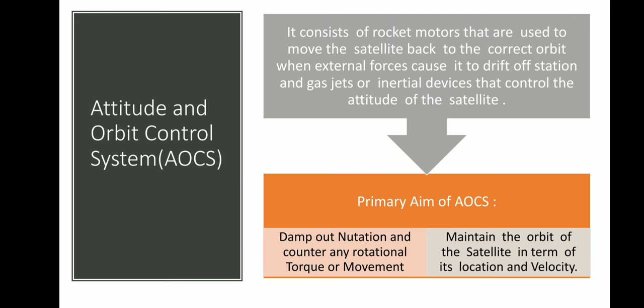Now we will study the first one, that is the attitude and orbit control system — the AOCS. It consists of rocket motors that are used to move the satellite back to the correct orbit when external forces cause it to drift off station, and gas jets or inertial devices that control the attitude of the satellite. The ultimate aim of having this subsystem is to maintain the satellite in its orbit at the correct inclination and at the correct position.